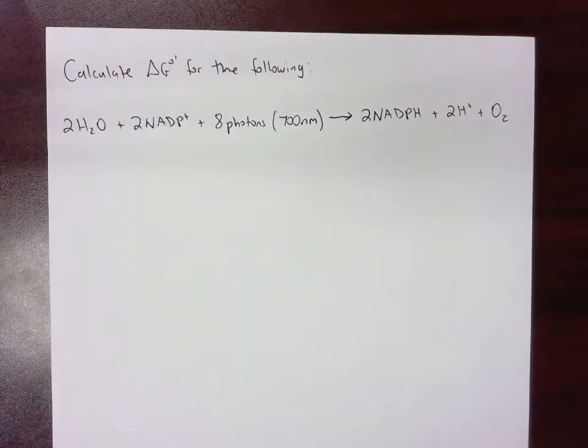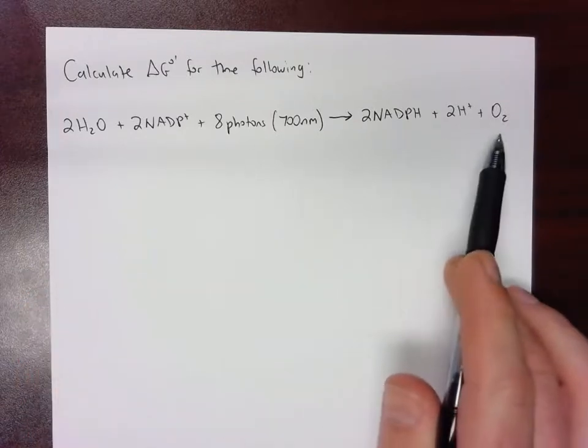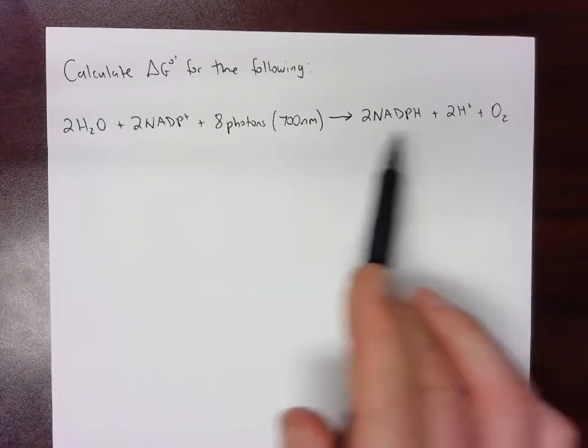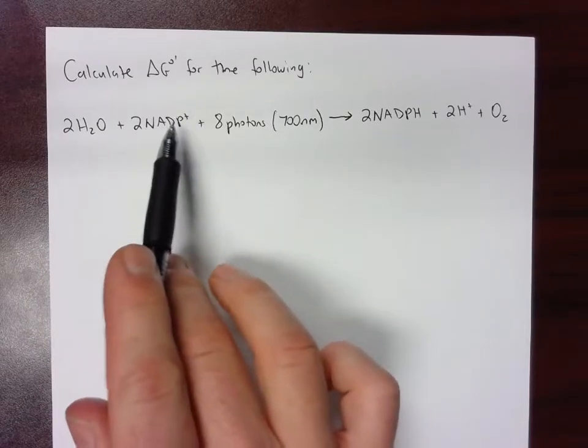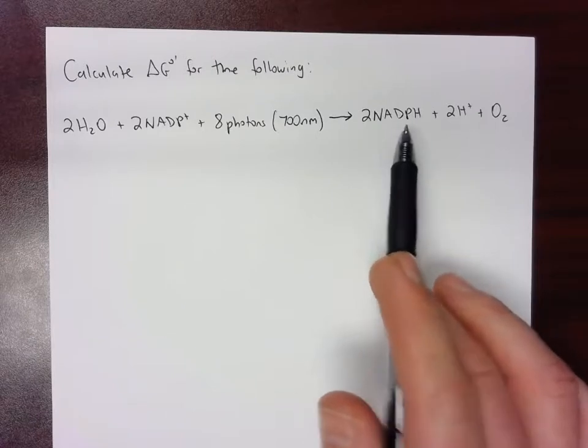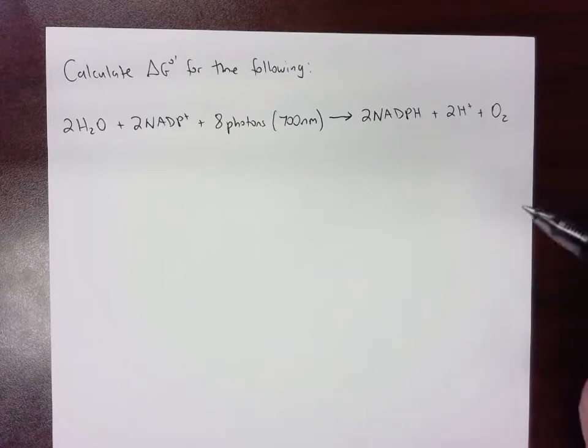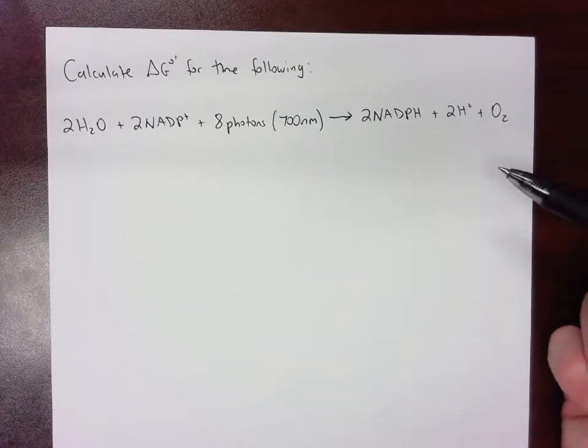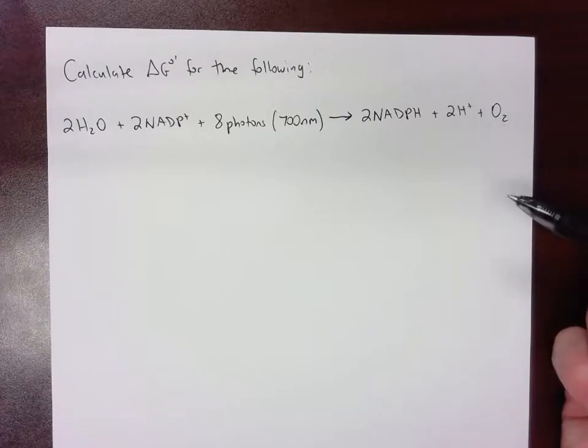Hello again. This video is a continuation of a previous video where we looked at the oxidation of water into oxygen using the redox pair water and oxygen and NADP plus NADPH, and we found that the delta G is very steep coming in at about positive 440 kilojoules per mole.